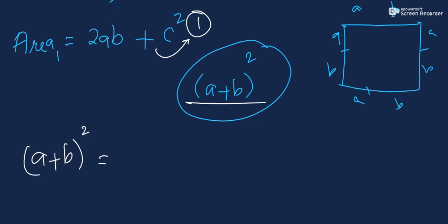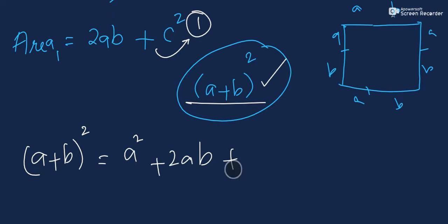Expanding the formula, the area equals A squared plus 2AB plus B squared. This is Area 2. So we now have two expressions for the area of the same bigger square.